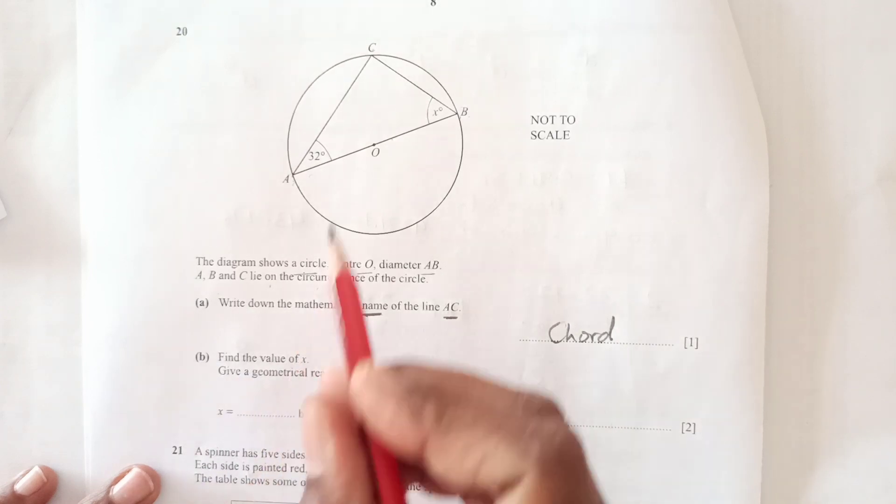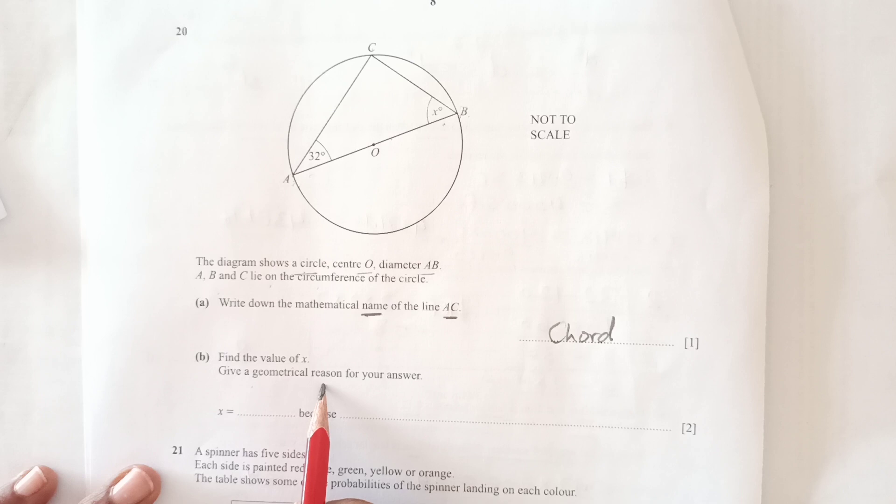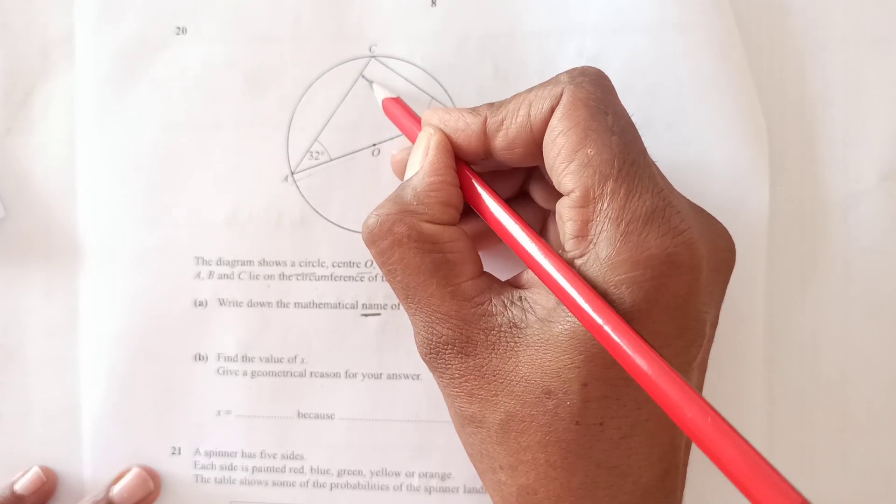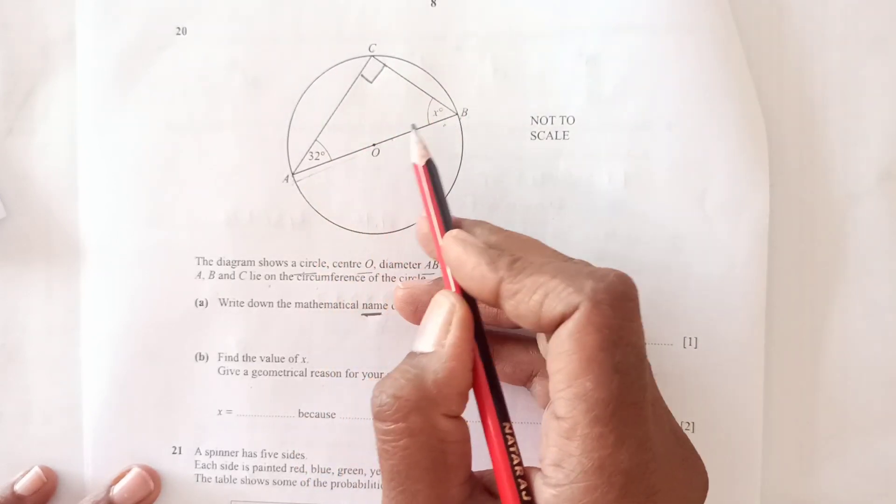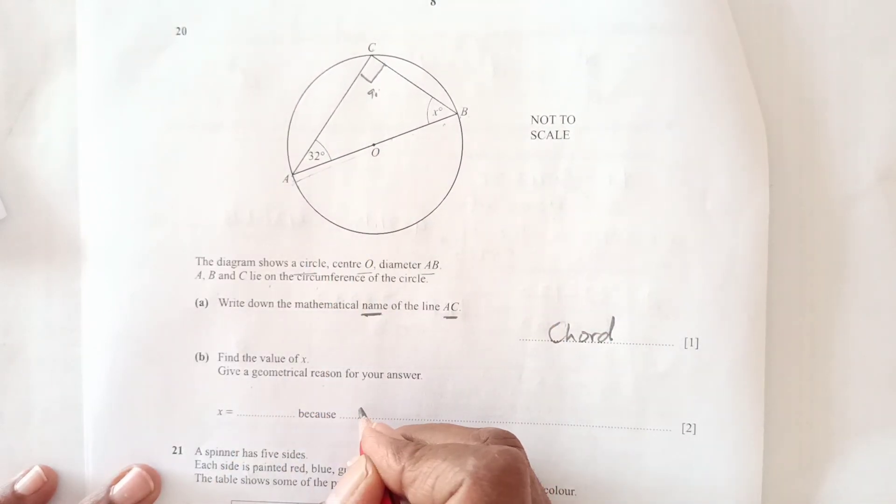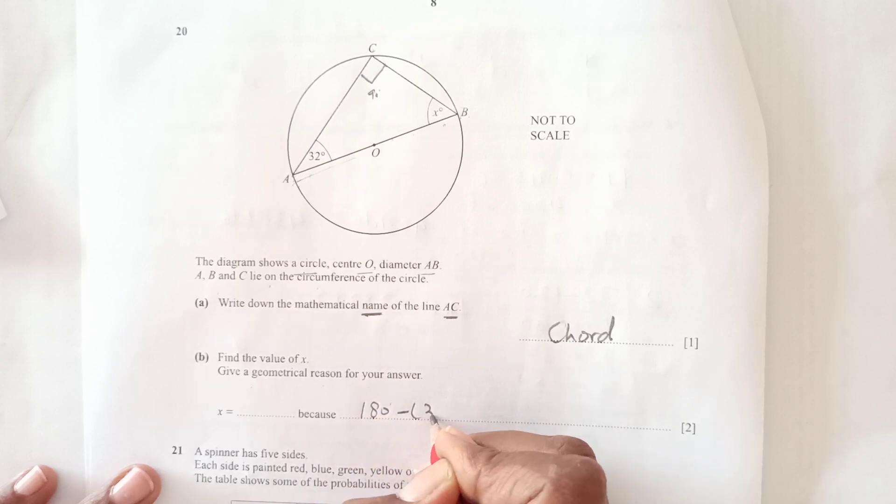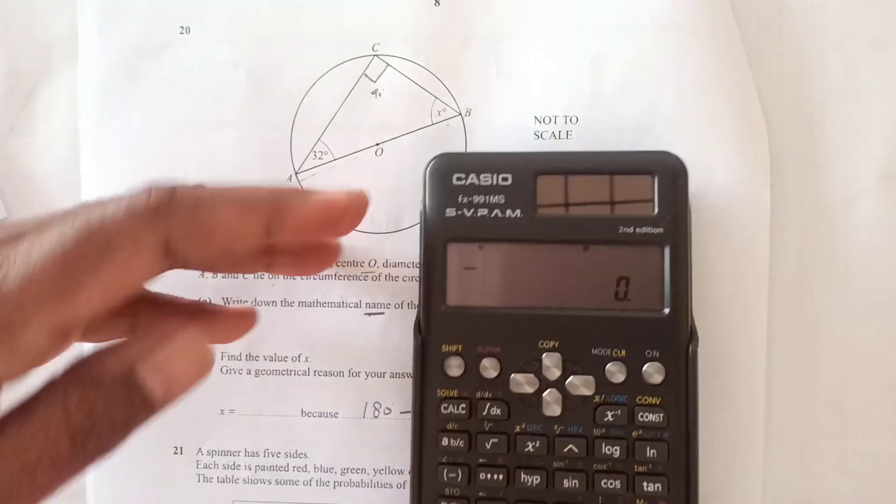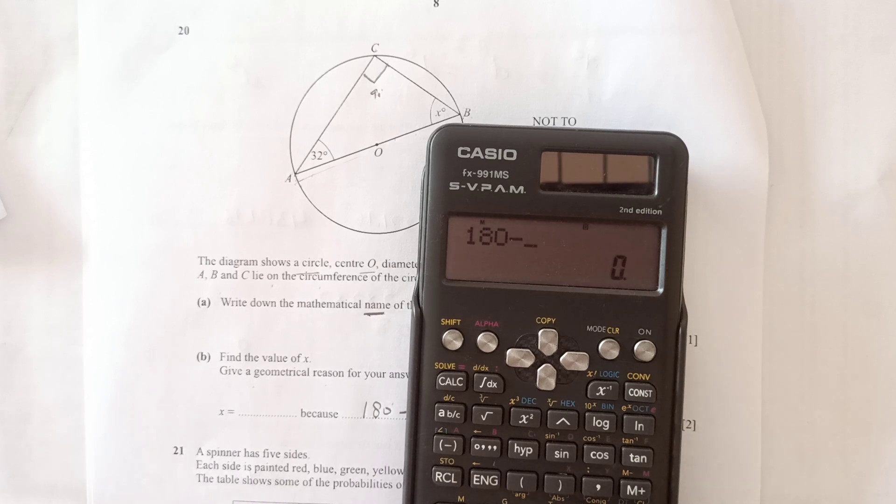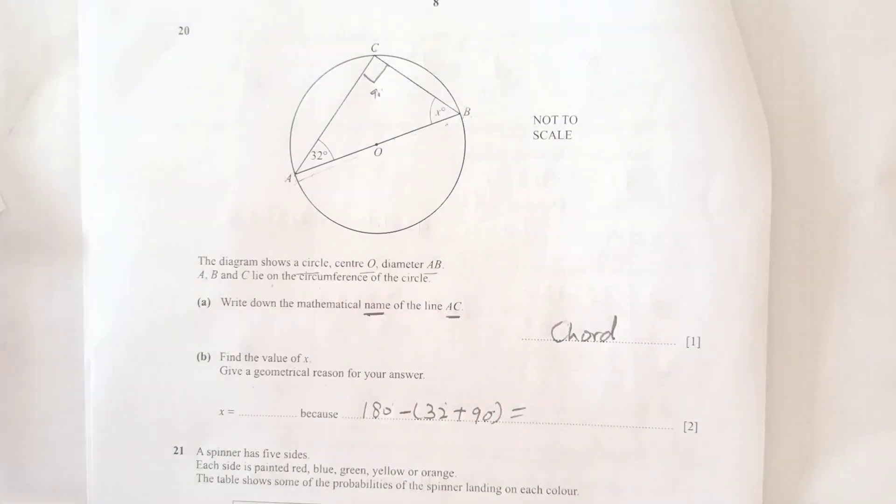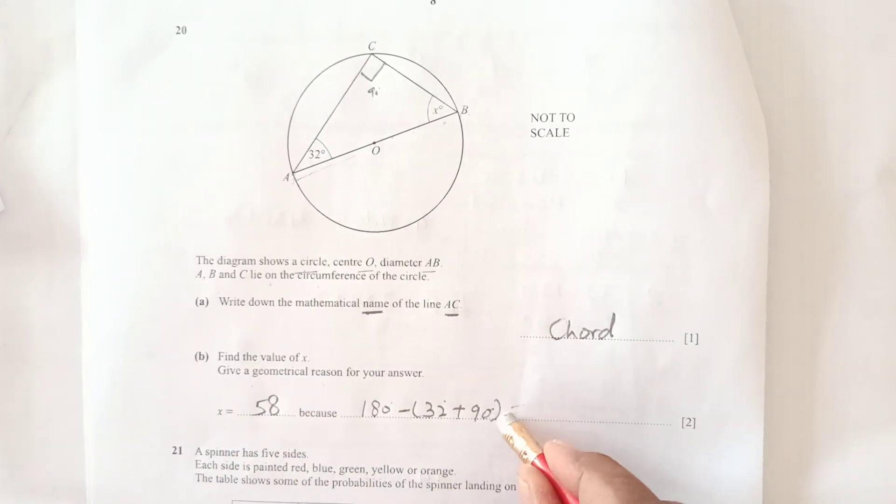Part B: Find the value of x. Since AB is a diameter, this angle will be 90 degrees because the angle in a semicircle is 90. We subtract from 180: 180 minus (32 plus 90), which equals 58. The reason is angle in a semicircle is 90 degrees.